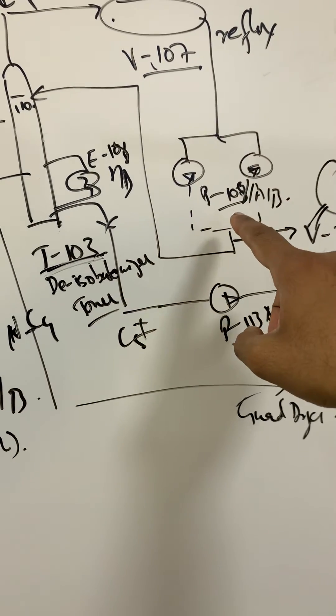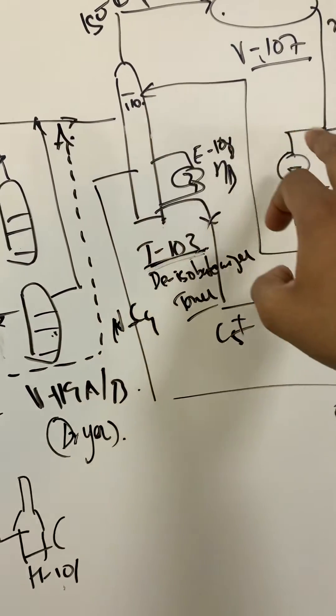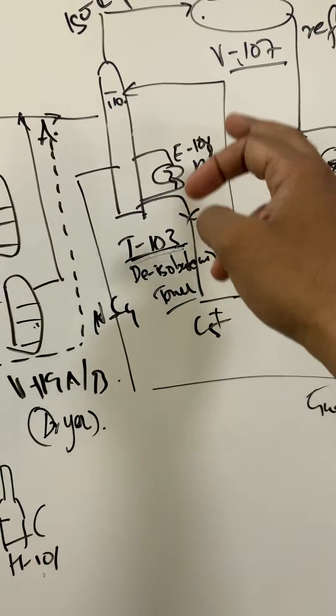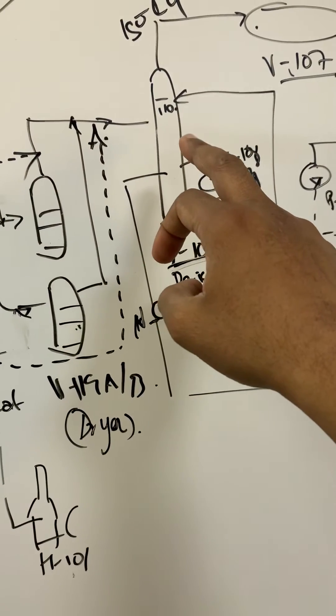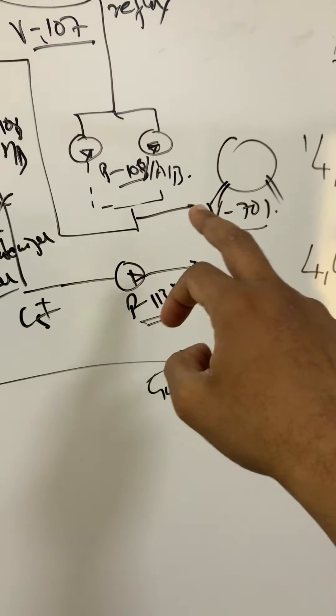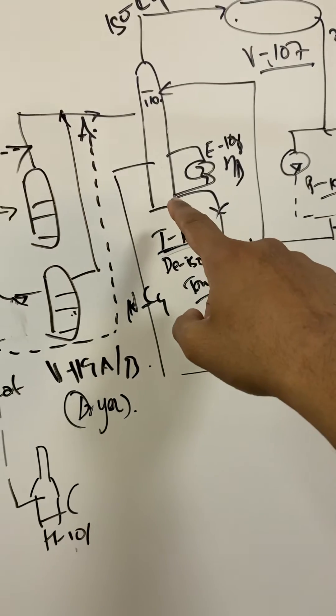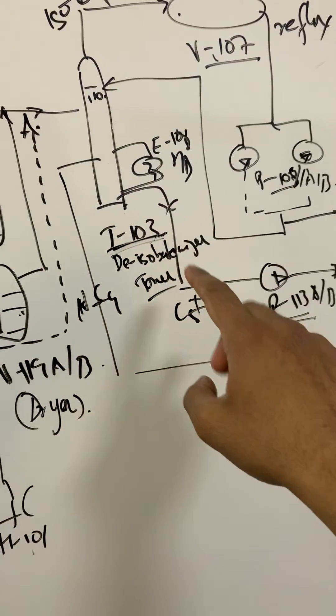So a stream goes to that because that's what it's called, a reflux. It goes back to the T103 minimum recirculation, and then the remnant goes back to our sphere V701 bottom.